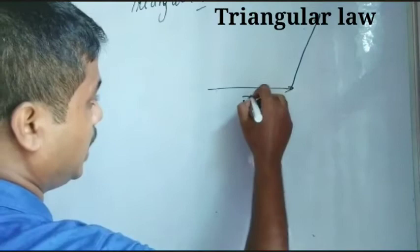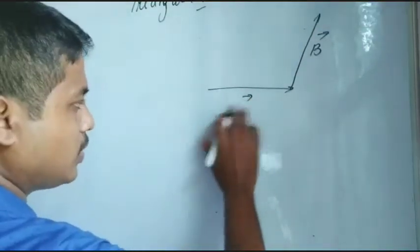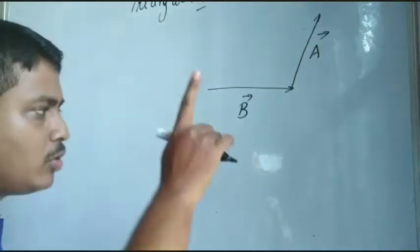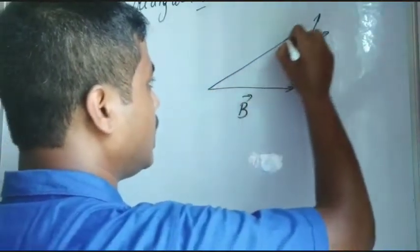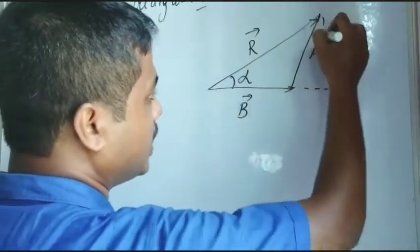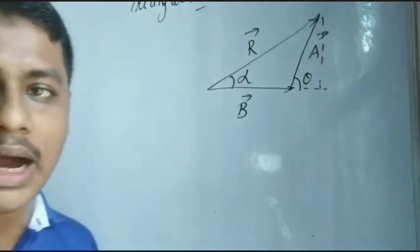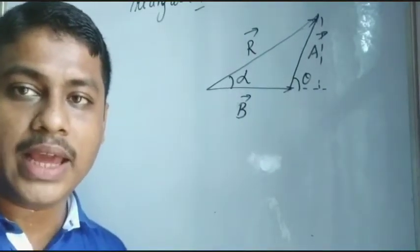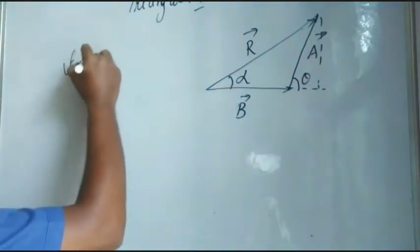So our diagram was in this way. This was our vector A and this was our vector B. The resultant will be represented by its diagonal. We have taken this as angle alpha, and we have also extended this line where this angle will be theta. So after this, what I have to do is calculate the angle.